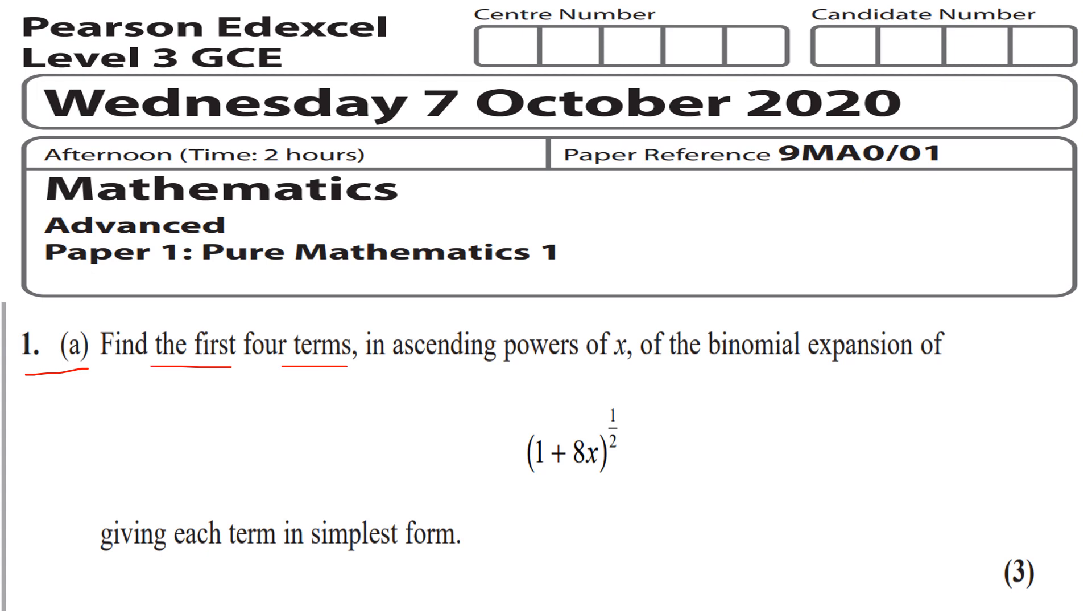Find the first four terms in ascending powers of x of the binomial expansion of (1 + 8x)^(1/2), giving each term in its simplest form. Pause the video, give the question a go and then press play when you're ready.